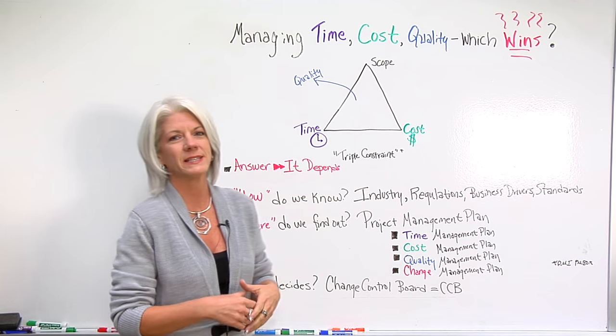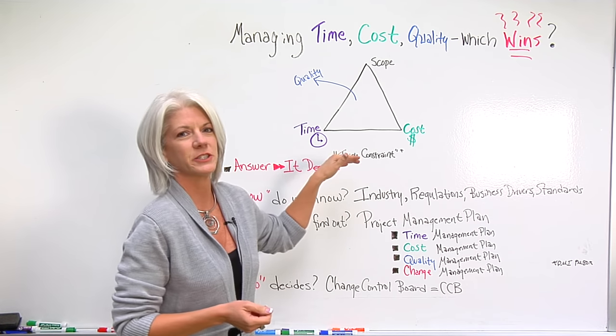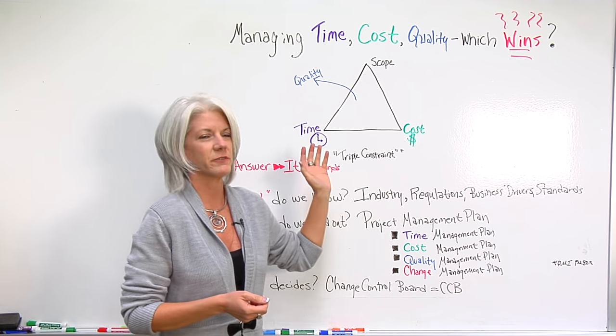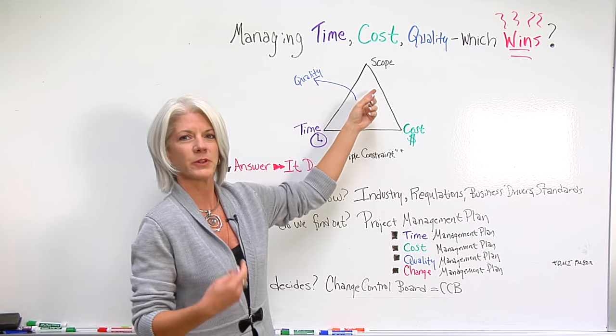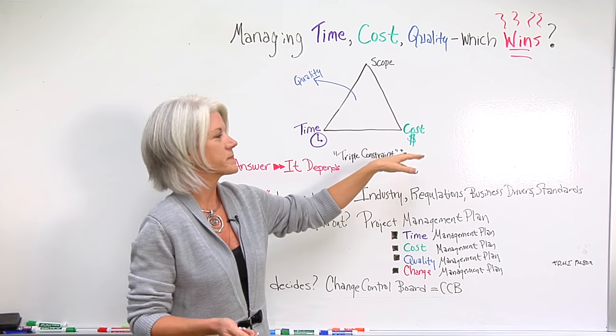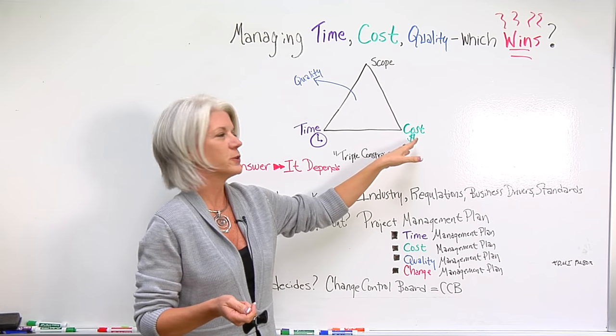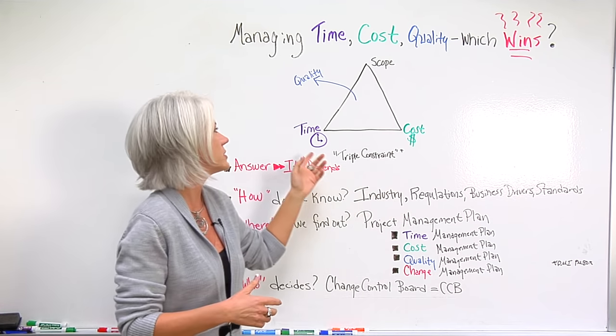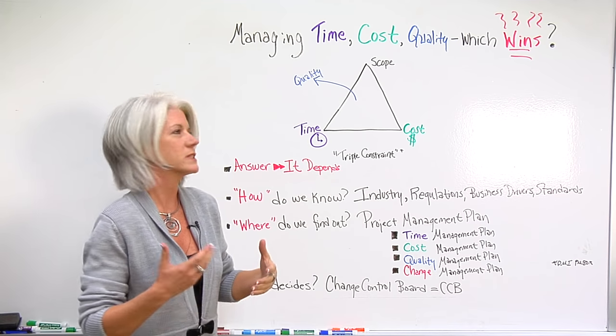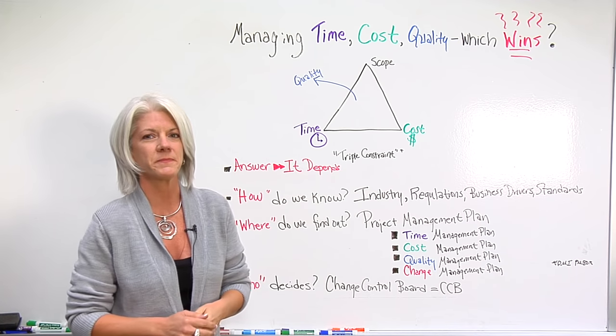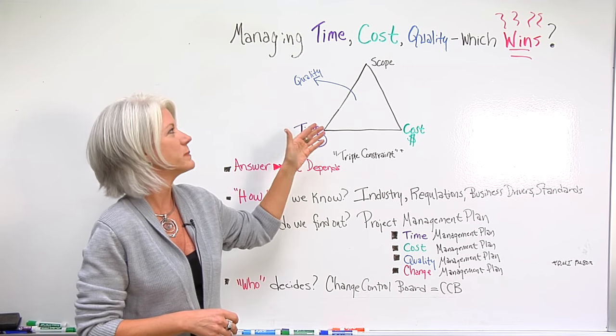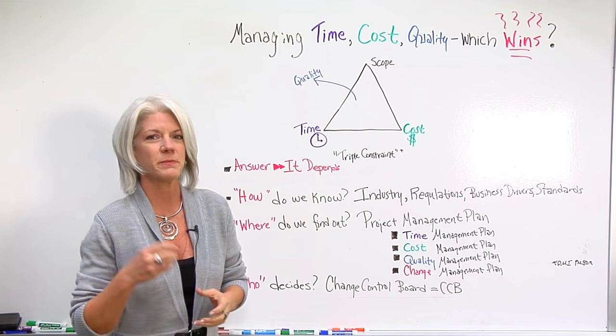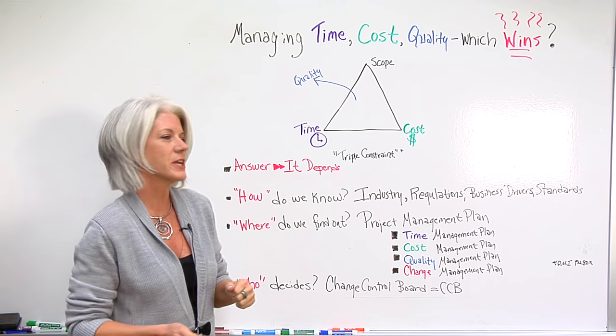Let's take a look at the triple constraint that we're managing throughout the project from beginning to end. That encompasses the scope or deliverables we're producing, the cost, expenses and budget, the time, schedules, milestones, as well as the quality. No wonder it's hard to determine which one wins, because there are a lot of things going on, typically a lot of moving parts and things changing.